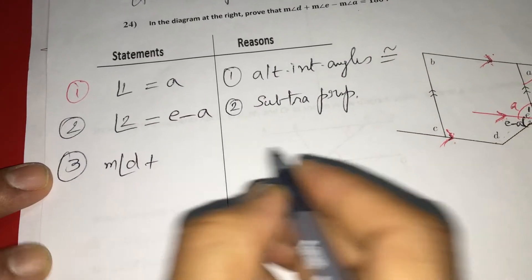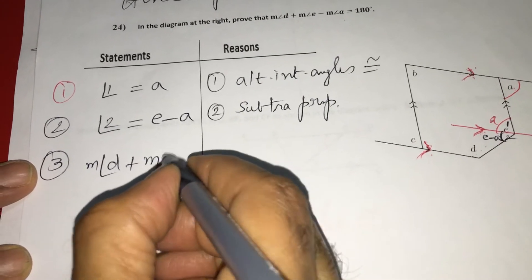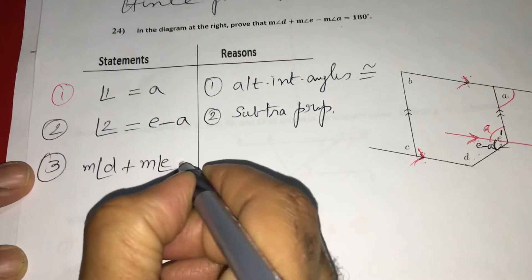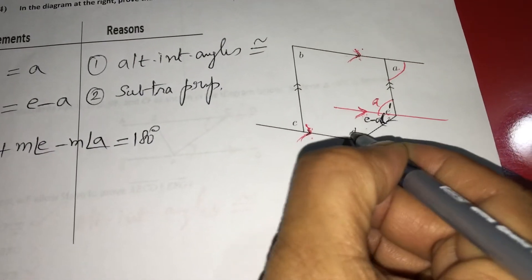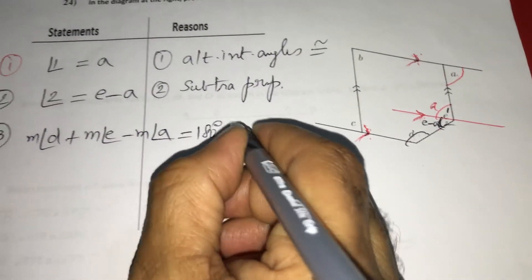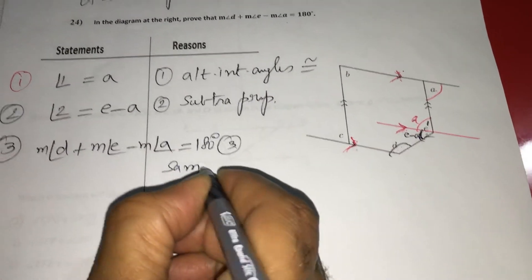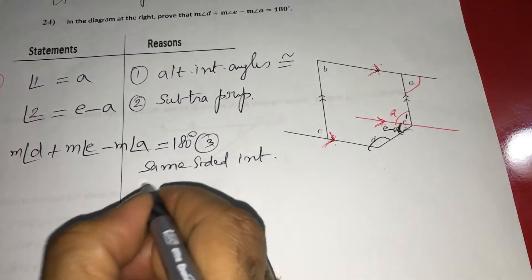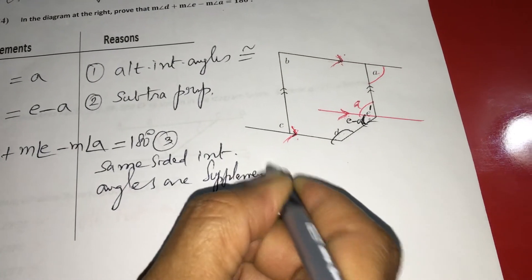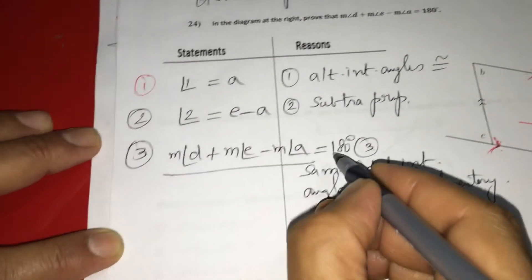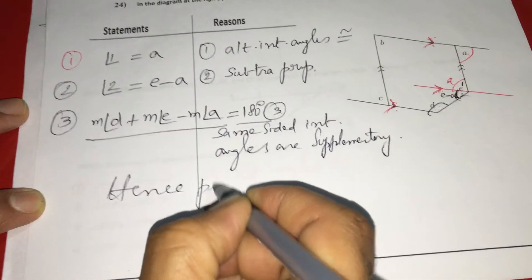Next, if you see this line and this line, these two angles are summed, so measure of angle D plus measure of angle E minus measure of angle A is equal to 180. Why? Because these two angles — this angle and this angle — their sum is 180, because the reason is same-sided interior angles are supplementary. That is the reason, so this is what we want — 180 — that is what I have proved, hence proved. In this way, we have to prove the 24th problem.